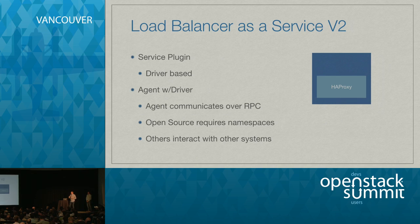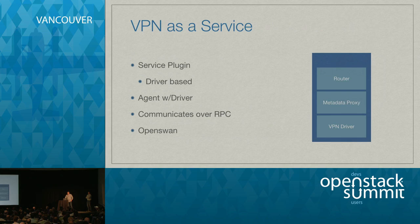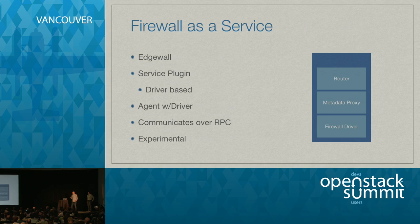For the reference implementation of LBaaS, you have a network namespace again — it's driver-based, the agent talks to the driver via RPC. The open source version uses HAProxy as the process, providing basic load balancing services. VPN as a service is very similar — within the router namespace of the network node, you have VPN software running using OpenSwan. Firewall as a service is an experimental service providing edge firewall services to the logical network — firewall rules and policies are applied at the router level. Since it's experimental, we need deployers to test it and provide feedback.